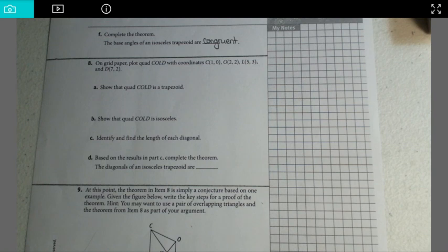A. Show that quad COLD is a trapezoid. B. Show that quad COLD is isosceles. C. Identify and find the length of each diagonal. D. Based on your results in Part C, complete the theorem. The diagonals of an isosceles trapezoid are blank.